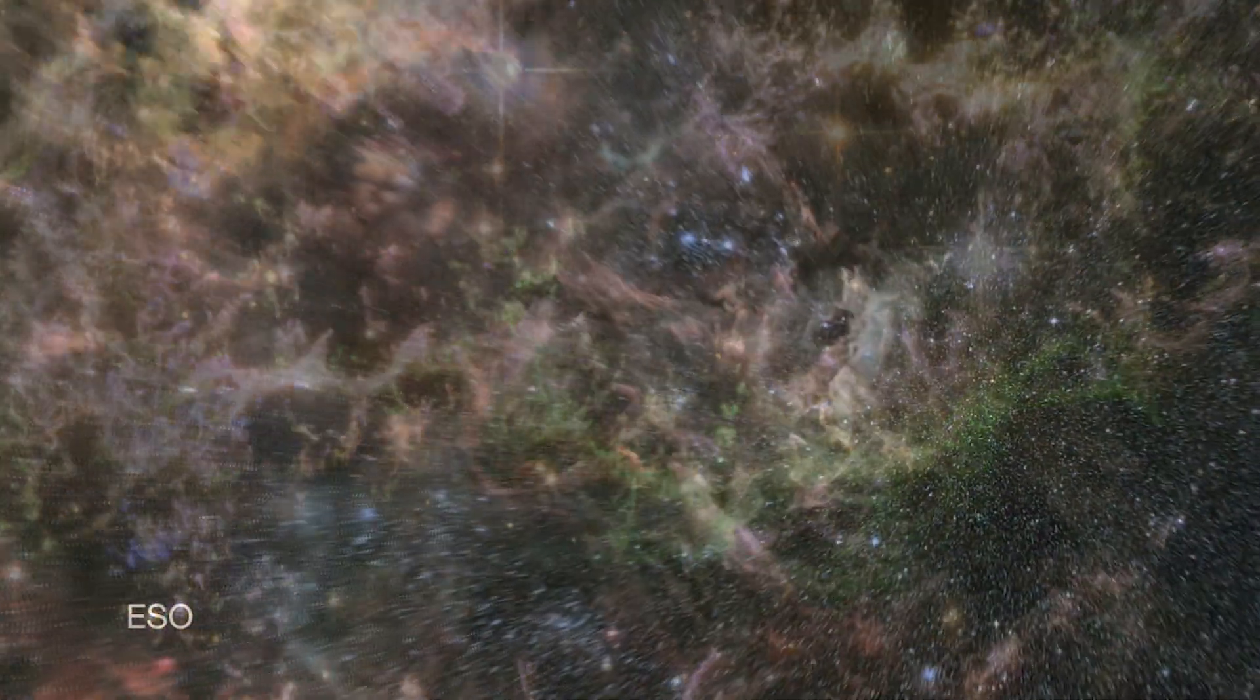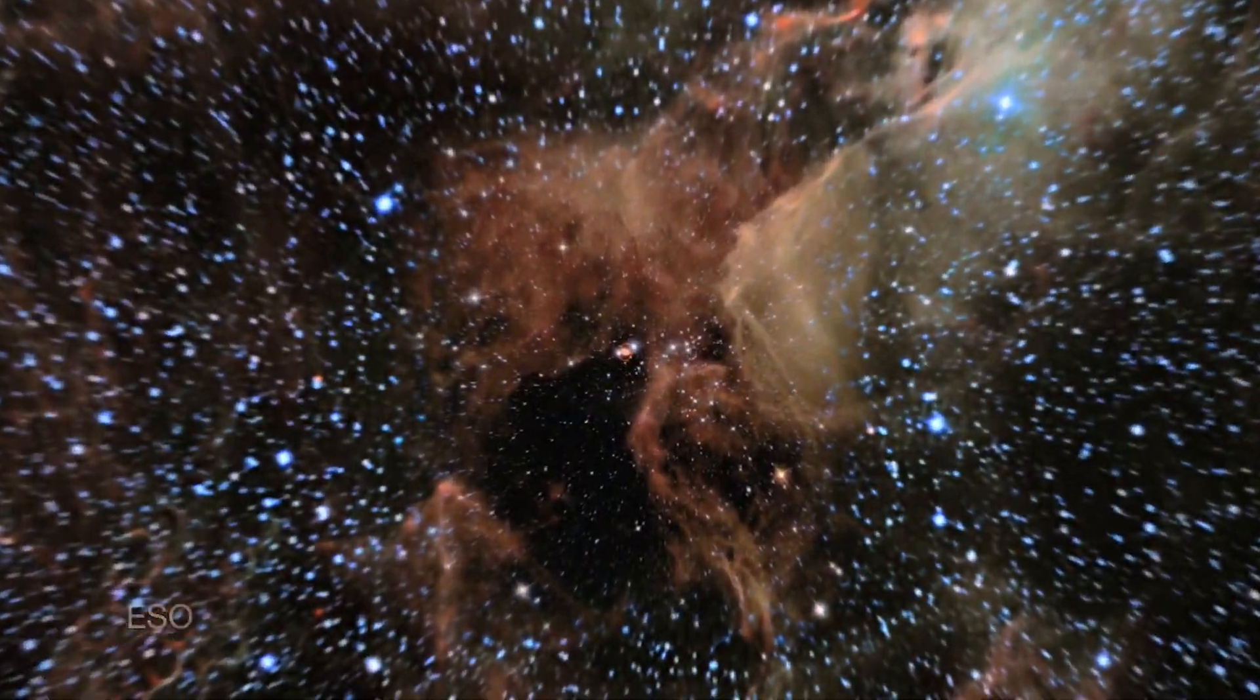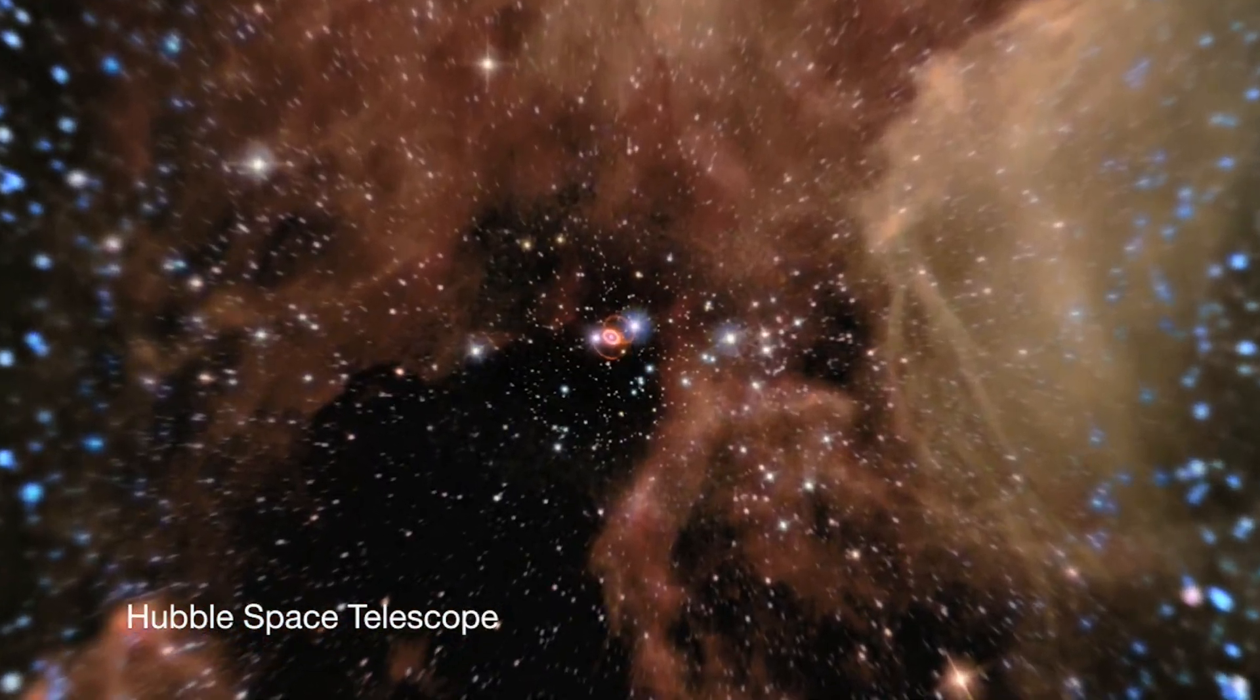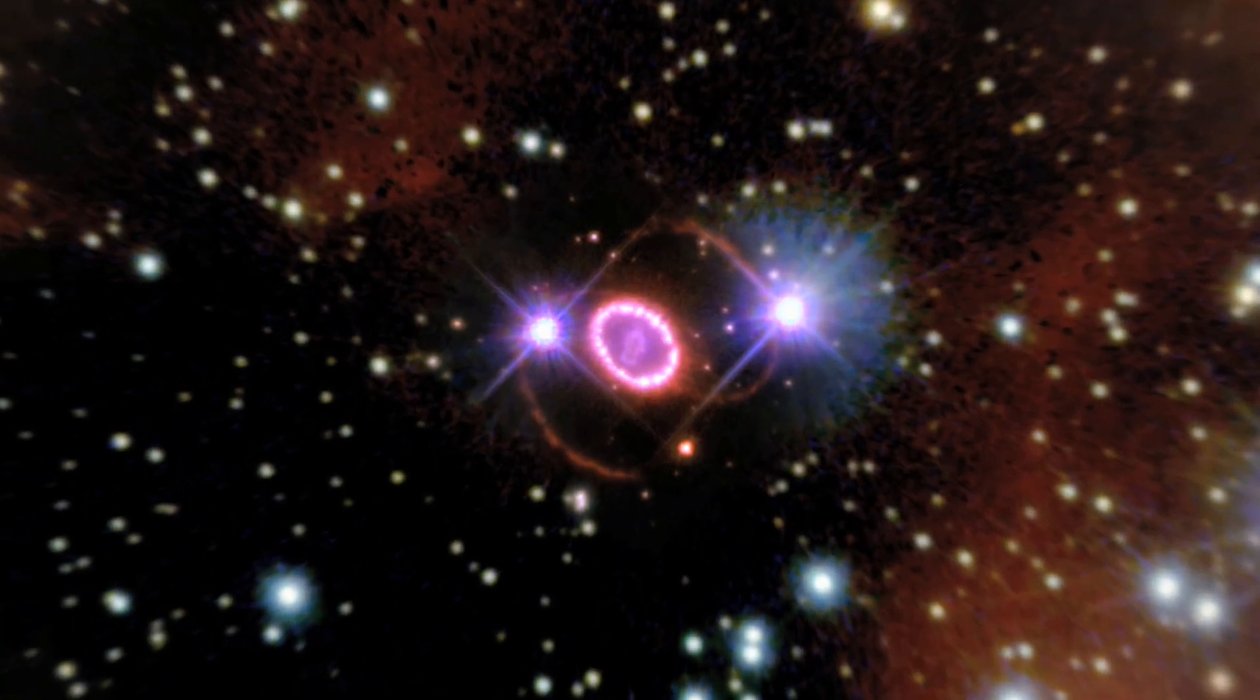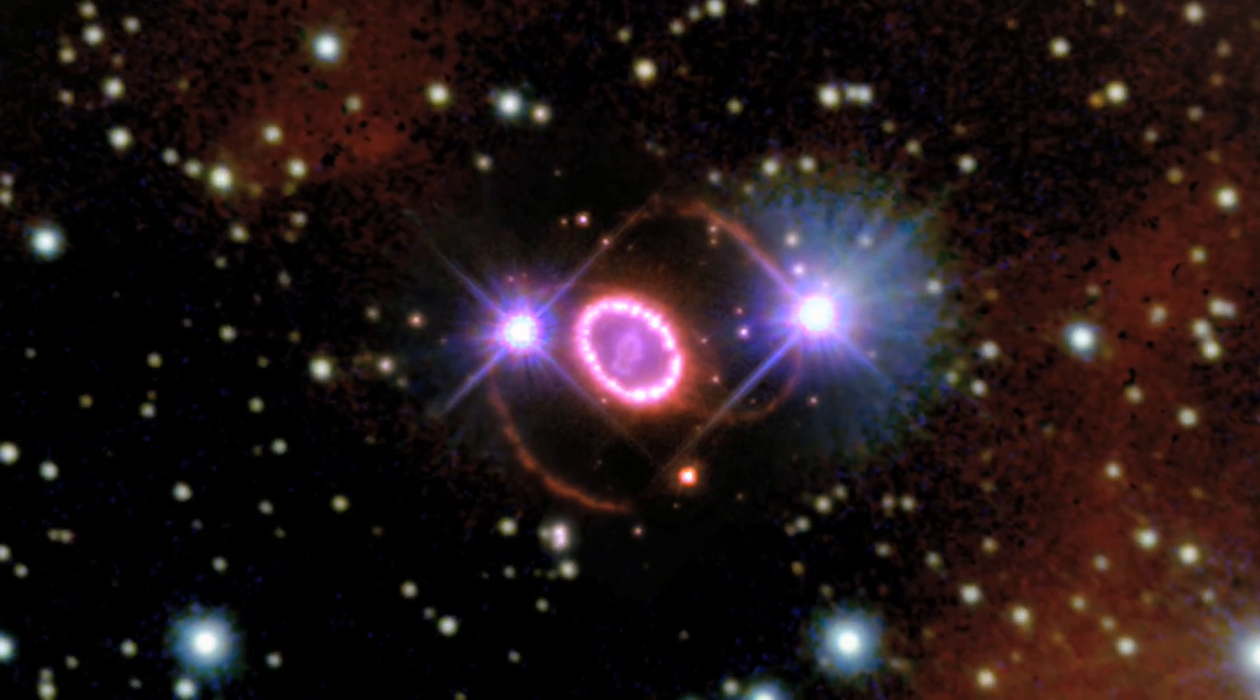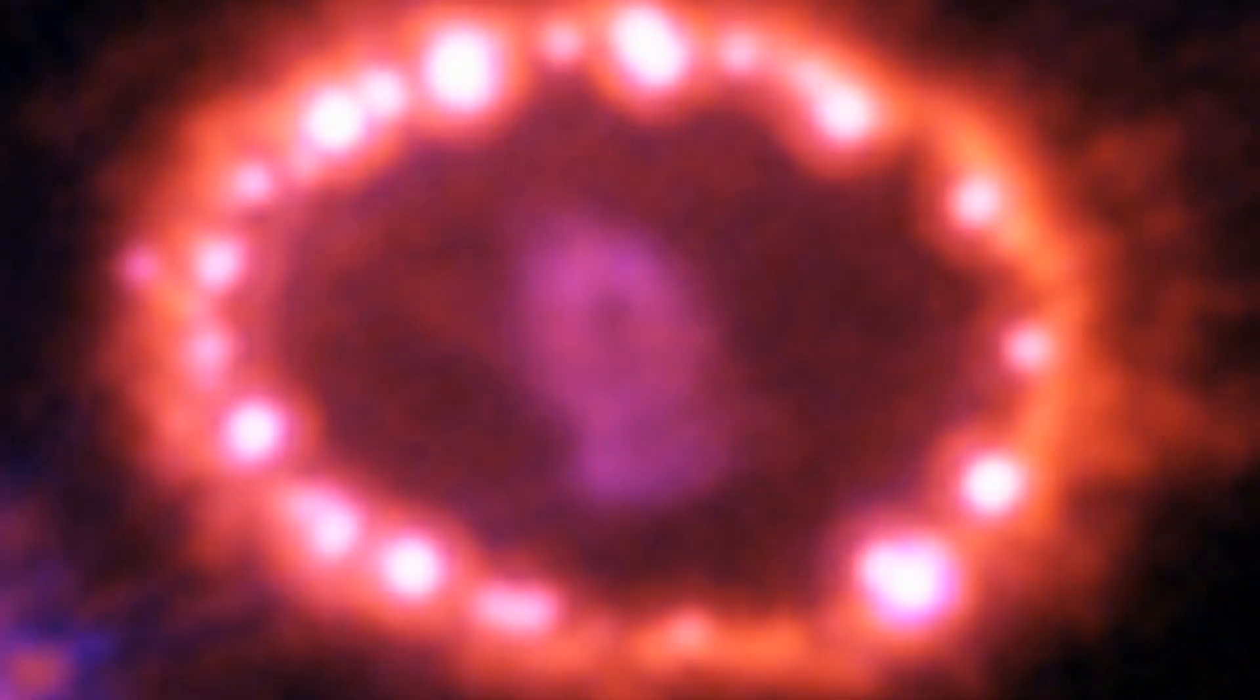One of the most distant objects that Hubble has been able to watch change over time is Supernova 1987A, the explosion of a star in the Large Magellanic Cloud that occurred in 1987. Over the past 20 years, Hubble has watched the shockwaves spread out and light up the gas surrounding the star.